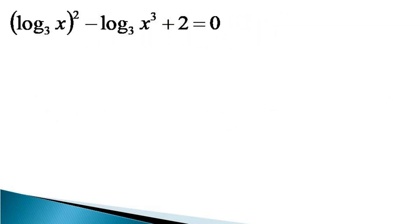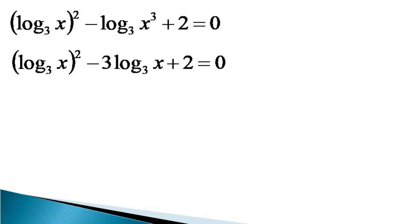To solve this equation, we make use of the power law of log in the second term of the left hand side. The equivalent equation becomes log of x to the base 3, whole squared, minus 3 log of x to the base 3, plus 2 is equal to 0.